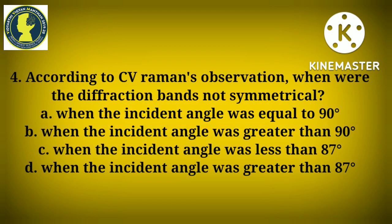Question four: According to CV Raman's observation, when were the diffraction bands not symmetrical? Option A: When the incident angle was equal to 90 degrees. Option B: When the incident angle was greater than 90 degrees. Option C: When the incident angle was less than 87 degrees. Option D: When the incident angle was greater than 87 degrees. The correct option is Option D: when the incident angle was greater than 87 degrees.